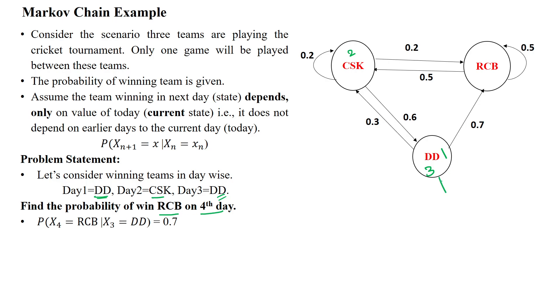Now, the system is available on the third day. Third day is Delhi Daredevils. From the Delhi Daredevils, what is the probability of winning RCB? That means, the next day will win by the RCB team. The probability value is 0.7. The next state, this is the next state, X4, fourth day, third state is X3.